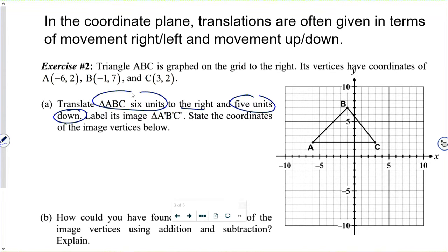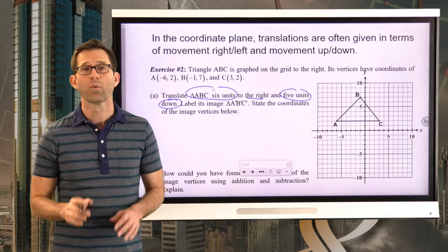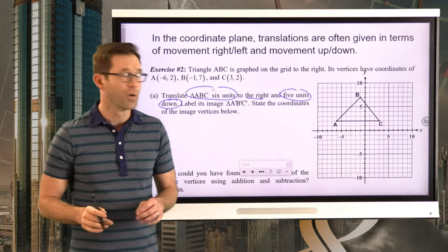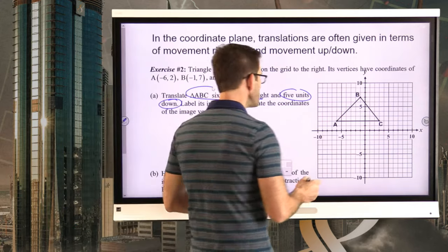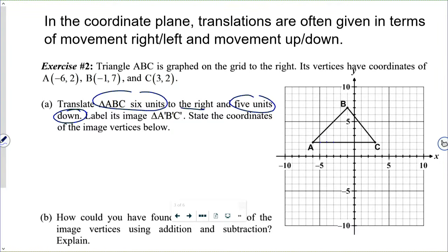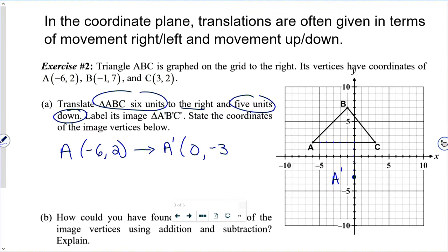This is easy enough — take the triangle and move it six units to the right and five units down. Let's do point A together. We go six units right and five units down, and there's A prime. In terms of mapping, A at (−6, 2) goes to A prime at (0, −3). Now pause the video and do the same for points B and C, then connect them with line segments.